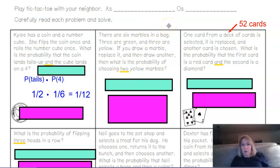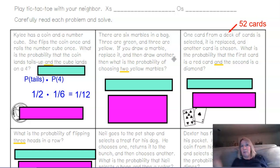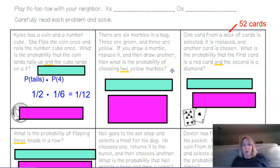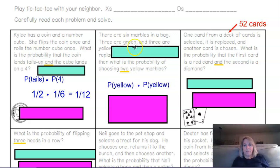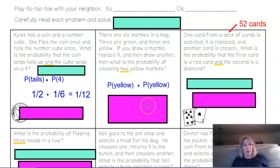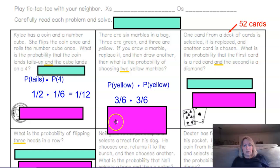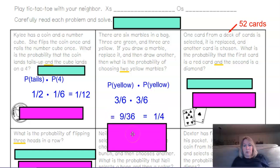There are six marbles in a bag: three are green and three are yellow. If you draw a marble, replace it — like that reset button — and then draw another, those are independent events, because the first draw didn't affect the second since you put the marble back. What's the probability of choosing two yellow marbles? We want the probability of yellow times the probability of yellow. Three out of six are yellow, so 3/6 times 3/6, which is 1/2 times 1/2, simplifies to 1/4.